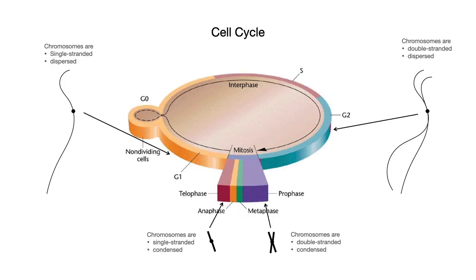We started last time and talked about the cell cycle. During most of the cell cycle, chromosomes are kind of invisible — they're all dispersed. And then during the S phase, those threads get replicated.